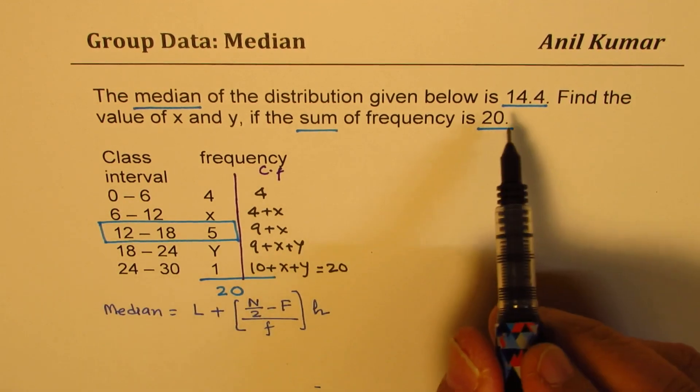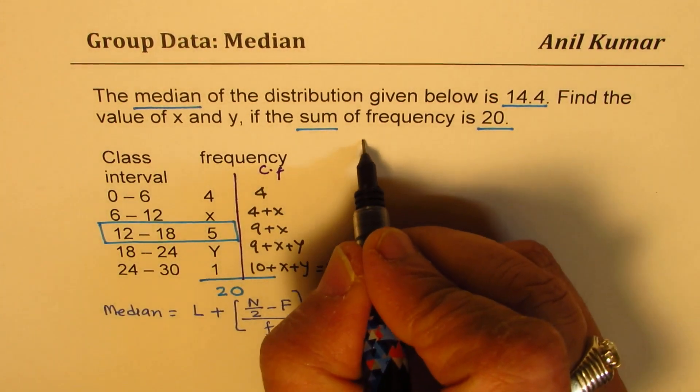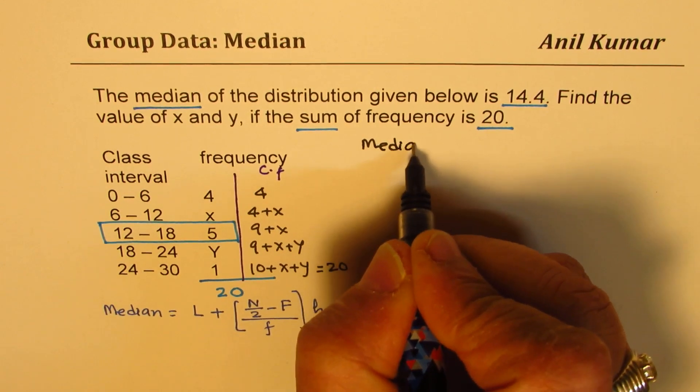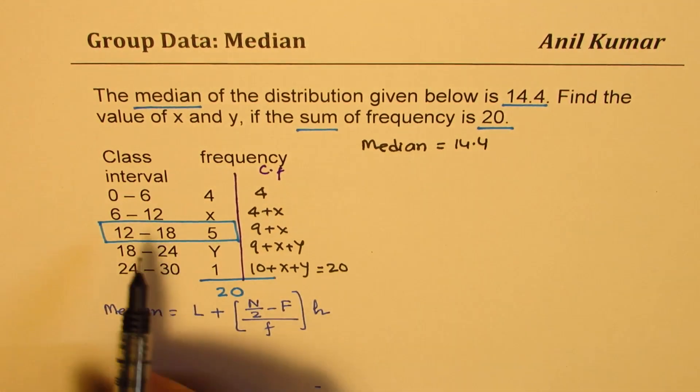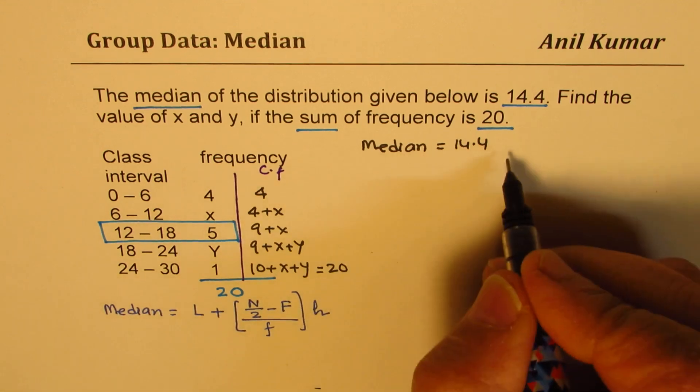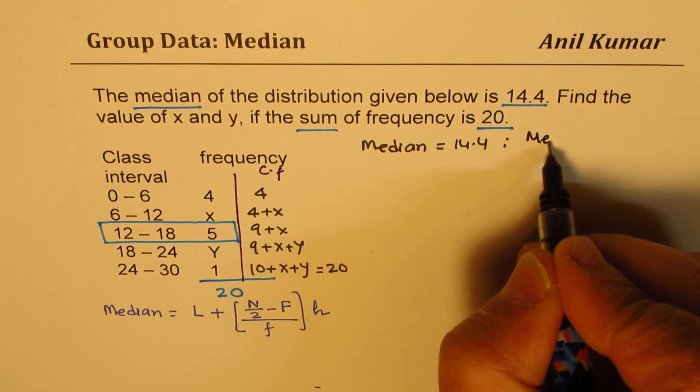Now in the given case, since we know that median equals 14.4, it is in this particular area, so median class is from 12 to 18.